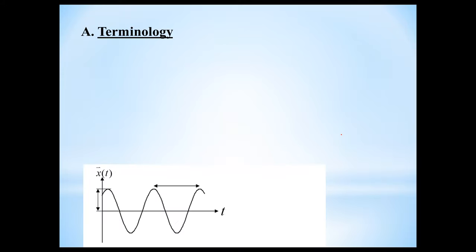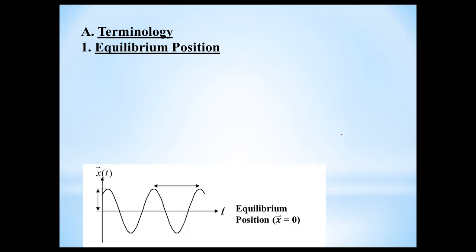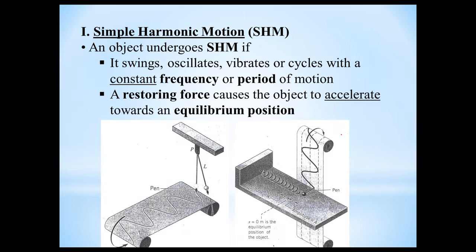Terminology. I've taken a graph of this wave shape, and the graph is illustrating the position of the object — either the pendulum bob or the mass attached to the spring — as a function of time. The equilibrium position is kind of like a reference position; that's the position where the object will eventually come to rest. On the graph, the equilibrium position is the line that cuts the graph directly in half.